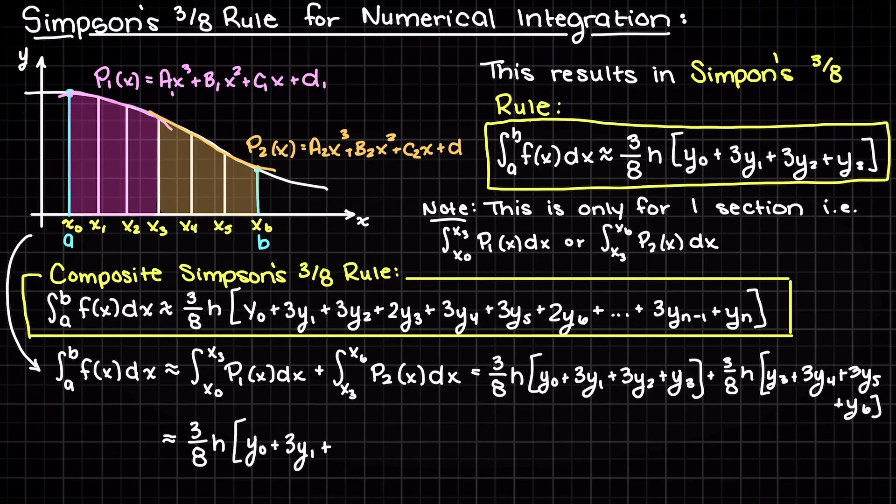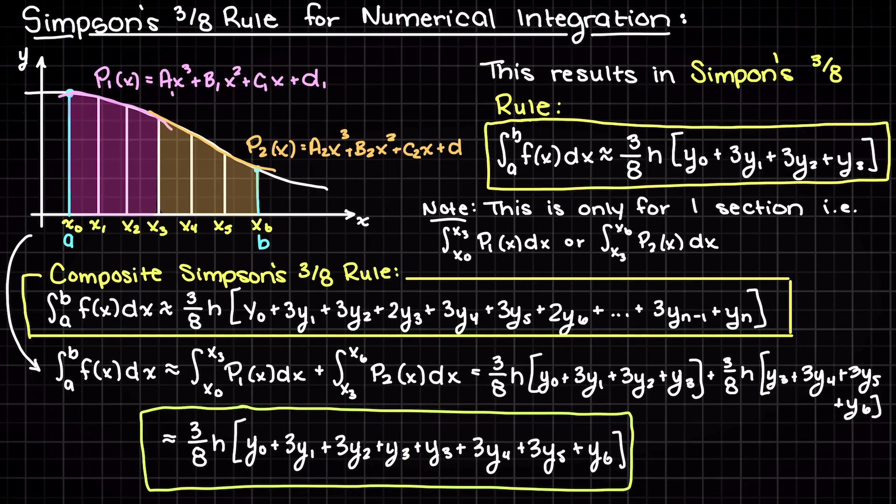Therefore we can simply factor out our common terms, which is 3 over 8 times h. Simplifying our solution, we see the same pattern emerges earlier.